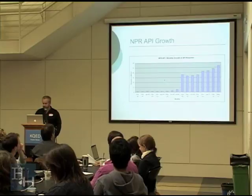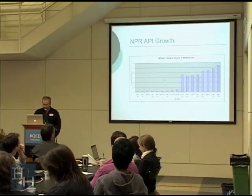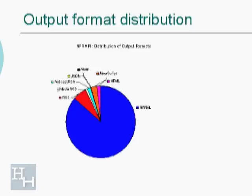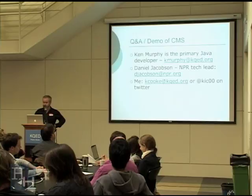The NPR API is growing significantly. It's gotten up to over 50 million requests as of March of this year, and most people use NPR ML as the output format. I think I'm just about to the end, but I can take any quick questions.